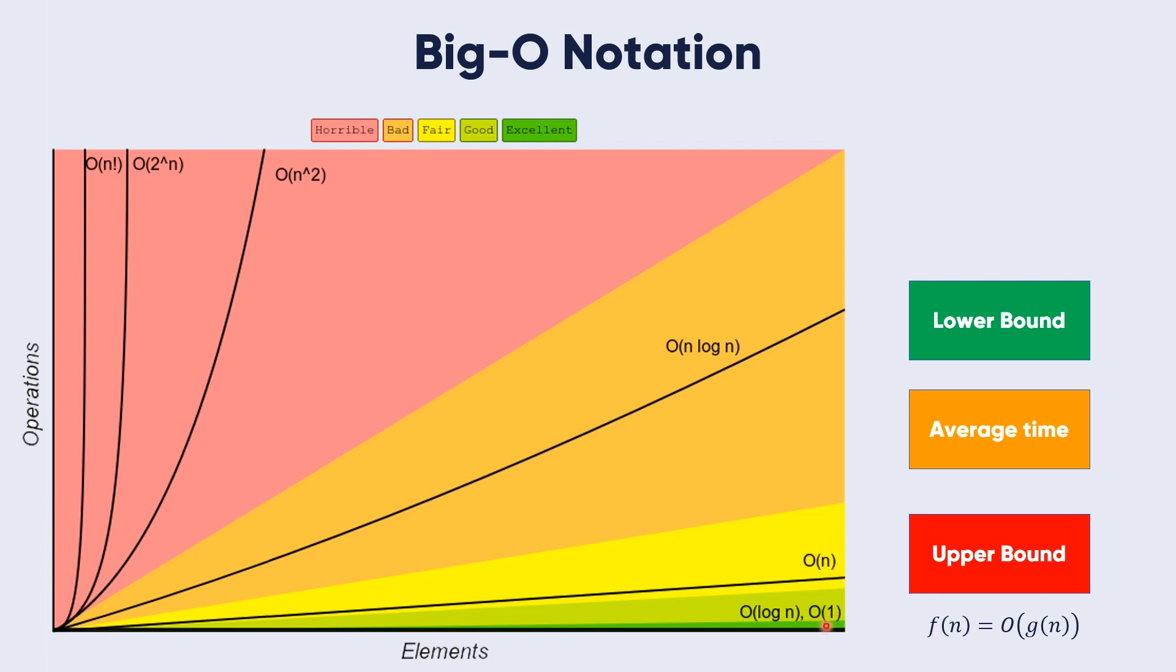We are moving from the linear O(n) to O(n log n). We start with O(1) - excellent, O(log n) - good, O(n) - fair. These algorithms are good.